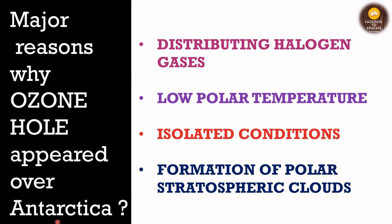A major question is: why do we see the ozone hole only in Antarctica and not throughout the stratosphere? The answer has four major points. First is the distribution of halogen gases — the northern hemisphere consumes more CFCs, yet due to air mixing, halogen gases distribute throughout the stratosphere and reach the South Pole. Second is low polar temperature — both poles have low temperatures, but the southern pole is much colder than the northern pole, and isolated conditions required for ozone hole formation are more prevalent in Antarctica.